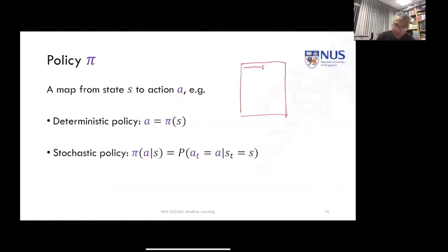So I have state 1 here, state 2 here. Each state gives some configuration of the environment, and for each of these states I want to learn a particular action that I'm going to take — A1 or A2.